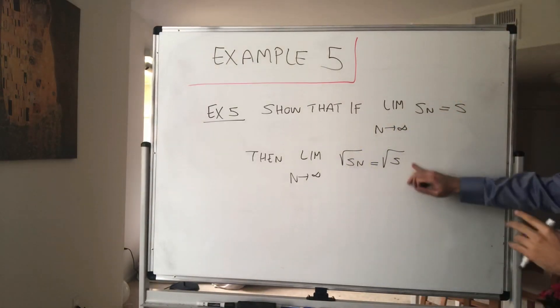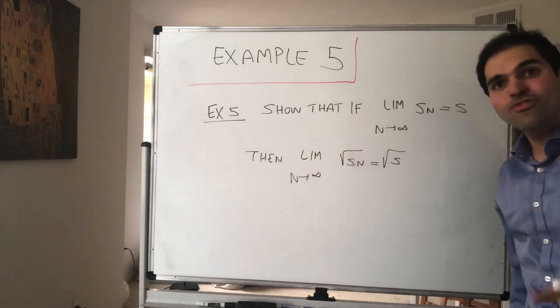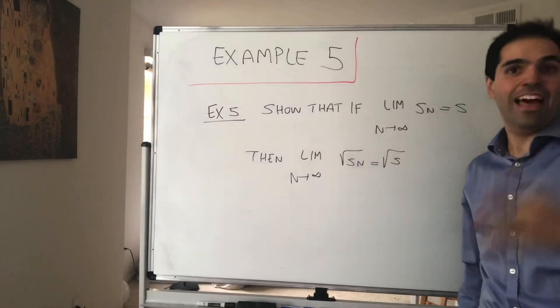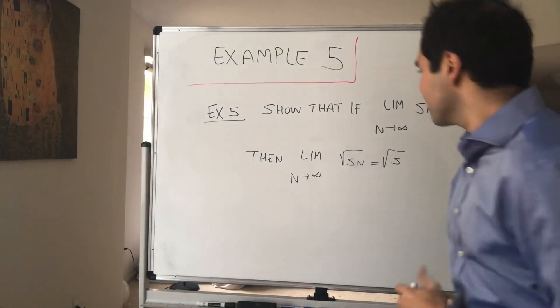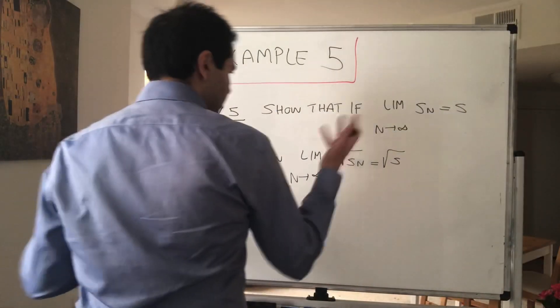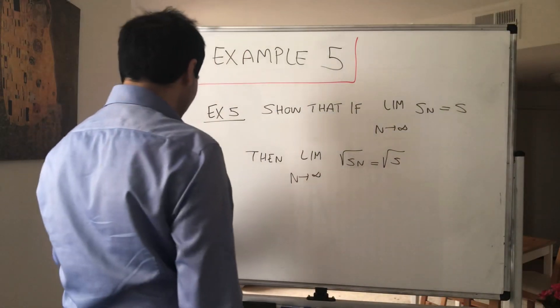You may not realize this, but implicitly we're proving that the function square root of x is continuous. In particular, what do we have to show?